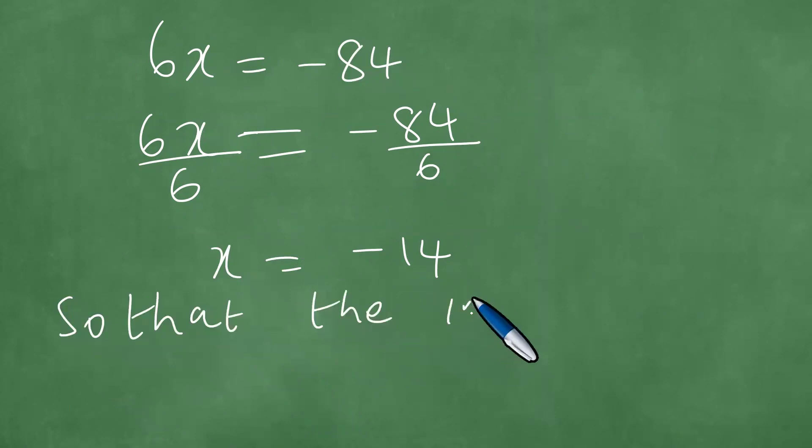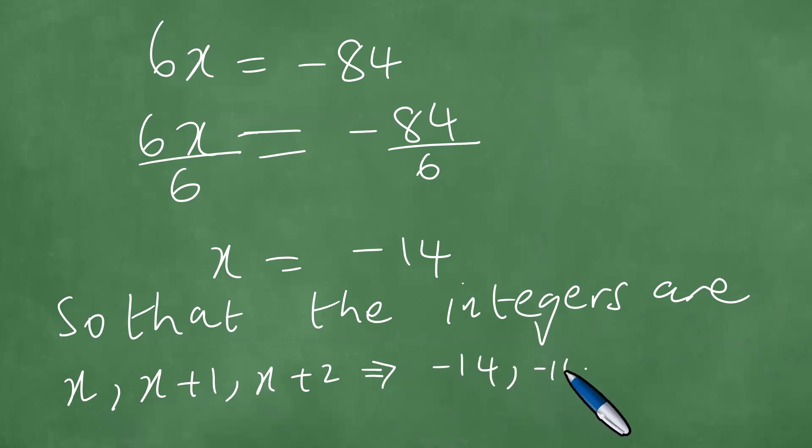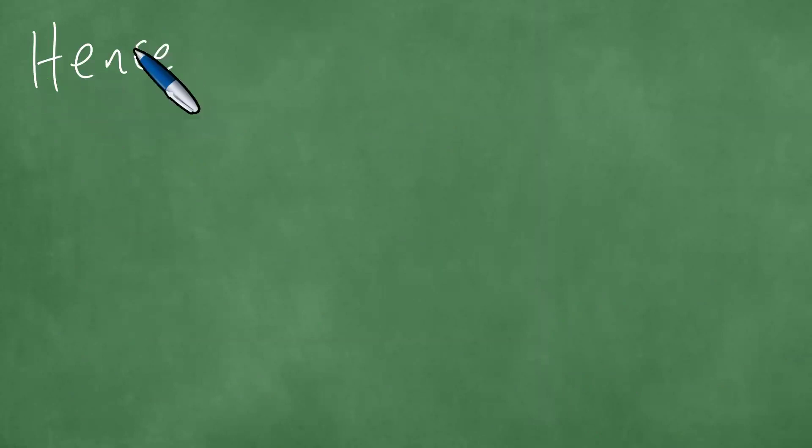So the integers are x, x plus one, and x plus two. That now gives us minus 14, minus 14 plus one which is minus 13, and minus 14 plus two which is minus 12. Hence, minus 14, minus 13, and minus 12 are the consecutive integers.